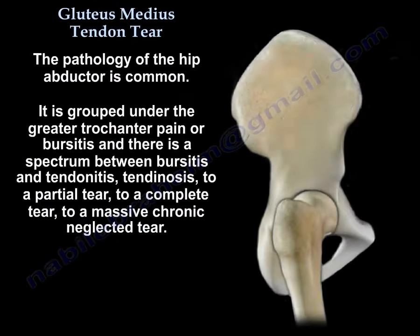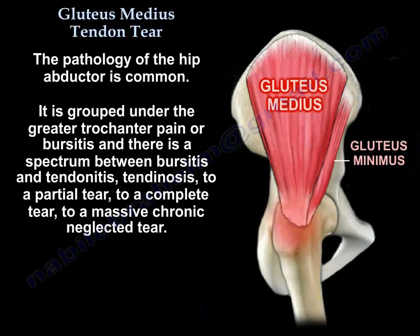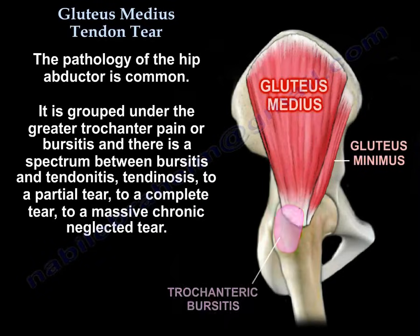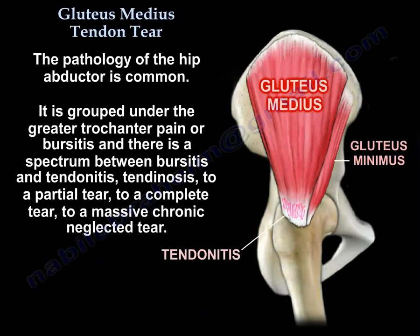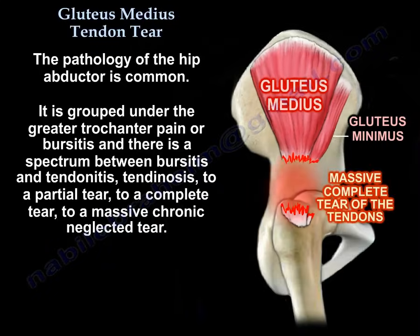The pathology of hip abductor is common and it is grouped under the greater trochanter pain or bursitis. There is a spectrum between bursitis and tendinitis, tendinosis, to a partial tear, to a complete tear, to a massive chronic neglected tear.